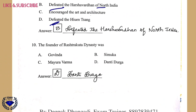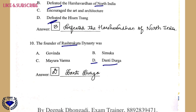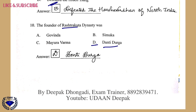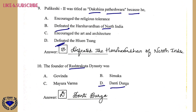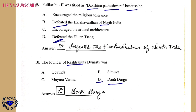Question 10: The founder of the Rashtrakuta dynasty was option D, Danti Durga. I hope you are understanding. If you are, kindly like, share, and subscribe.